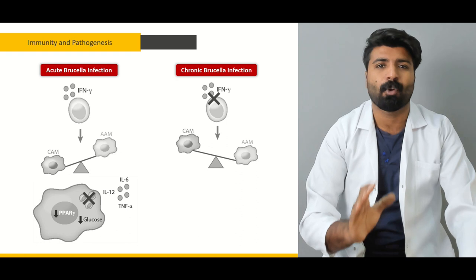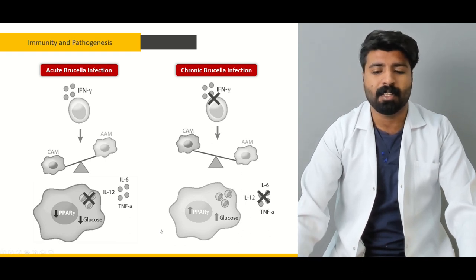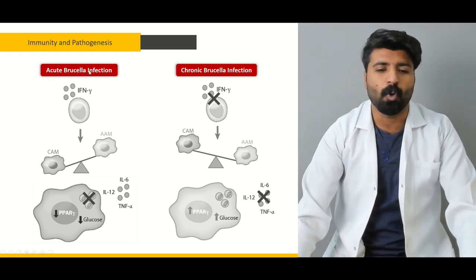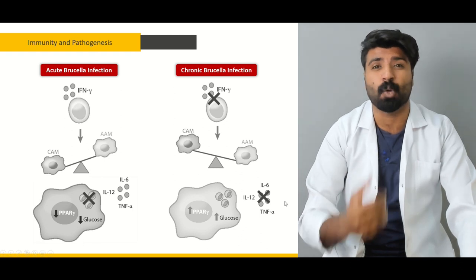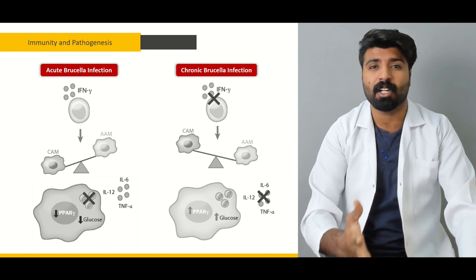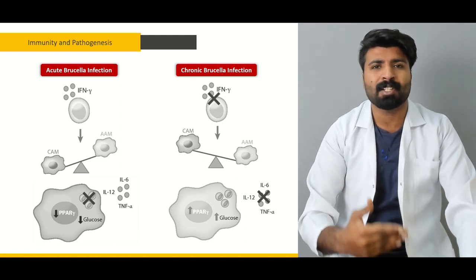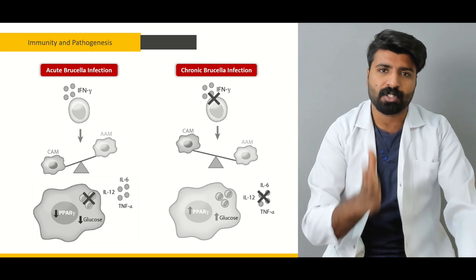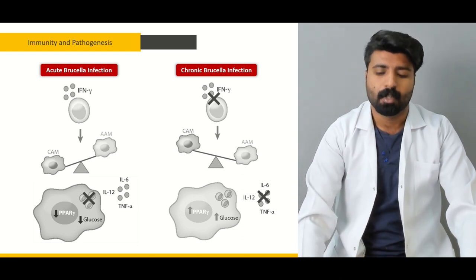In chronic infection, the body activates more classically activated macrophages to engulf and eliminate the organisms, but this fails because Brucella propagates inside the macrophages. In chronic brucellosis, the acute factors like IL-6, IL-12, and TNF-alpha are not produced. Once Brucella establishes in organs such as the genitals or reticuloendothelial system, it's difficult to eliminate because the macrophages become its next home.